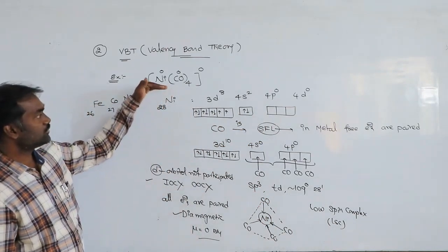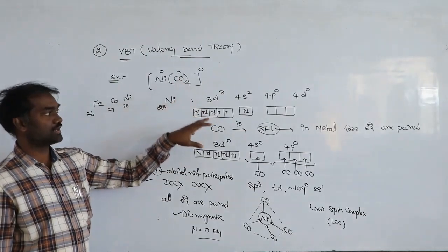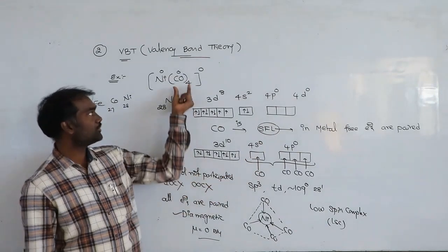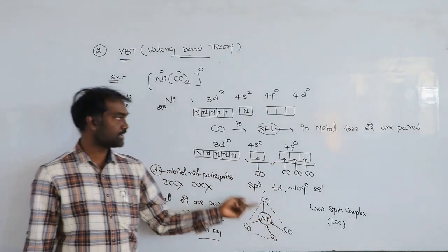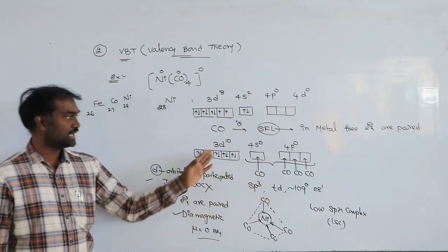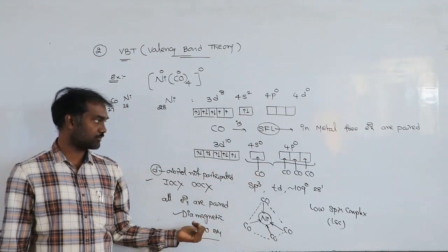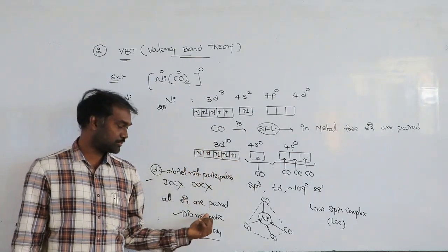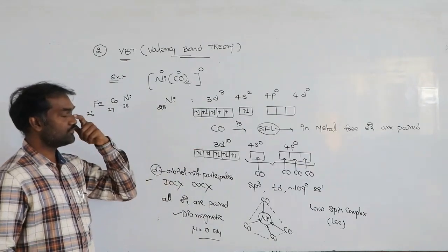In summary, to analyze a complex: first write the central metal and its electronic configuration. Next, determine the oxidation state. Then identify whether the given ligand is strong field or weak field — strong field means electrons pair up, weak field means electrons do not pair. Then determine hybridization, structure, bond angles. Compare spin before and after ligand — same means high spin, decreases means low spin. Inner d or outer d participation determines inner or outer orbital complex. If all electrons are paired: diamagnetic, mu zero. If unpaired electrons present: paramagnetic, mu = n.7 to n.9 Bohr magnetons.